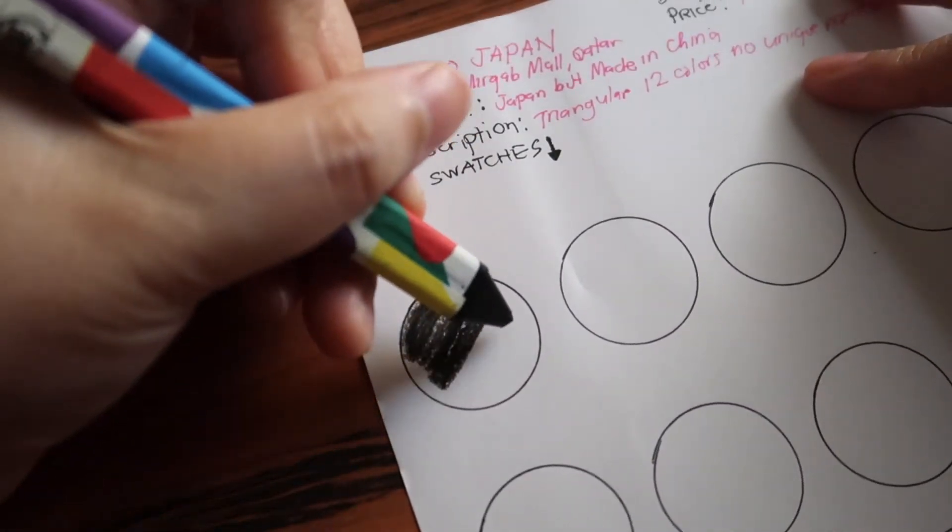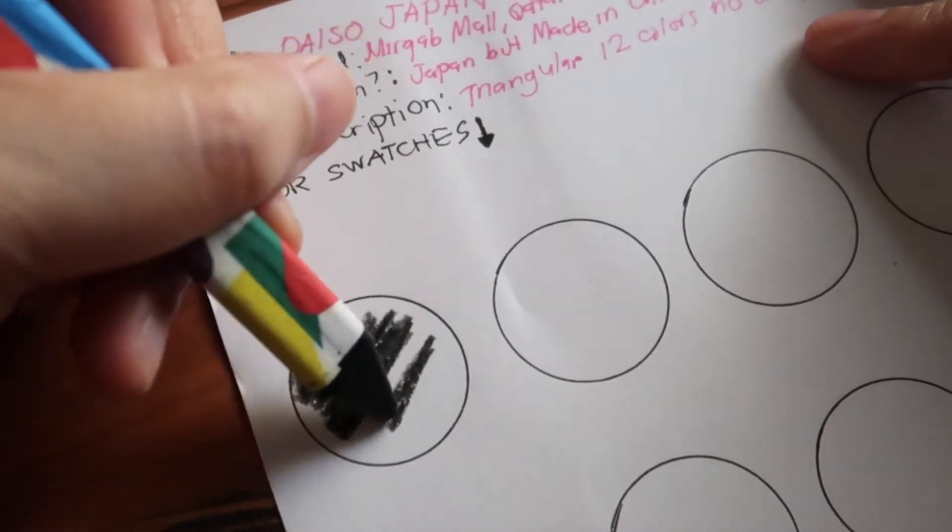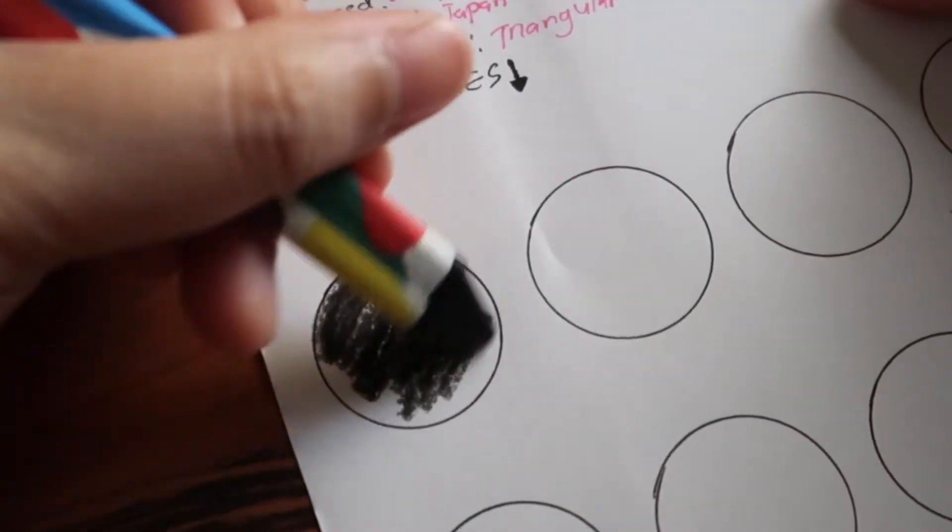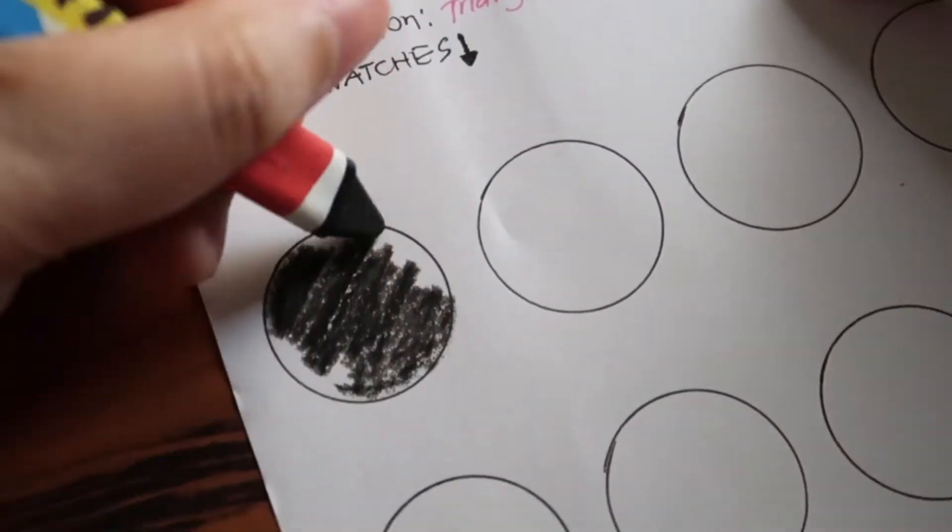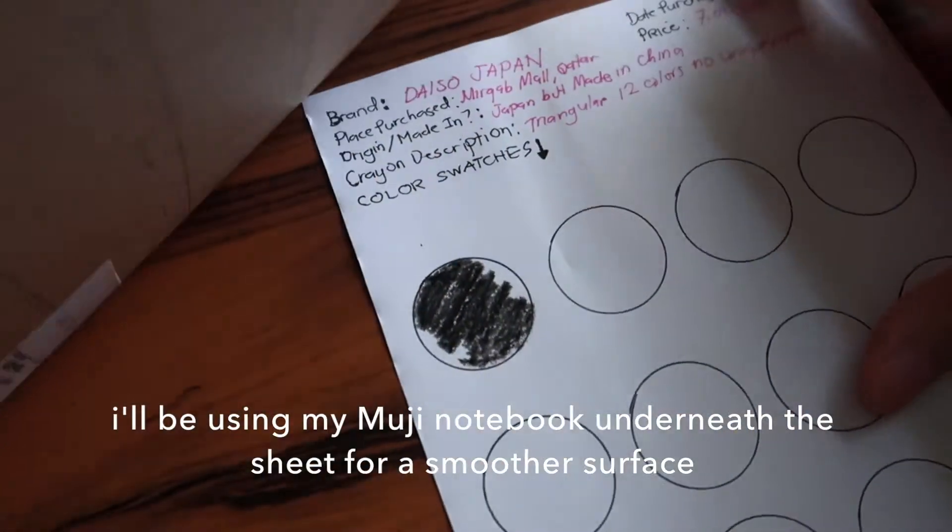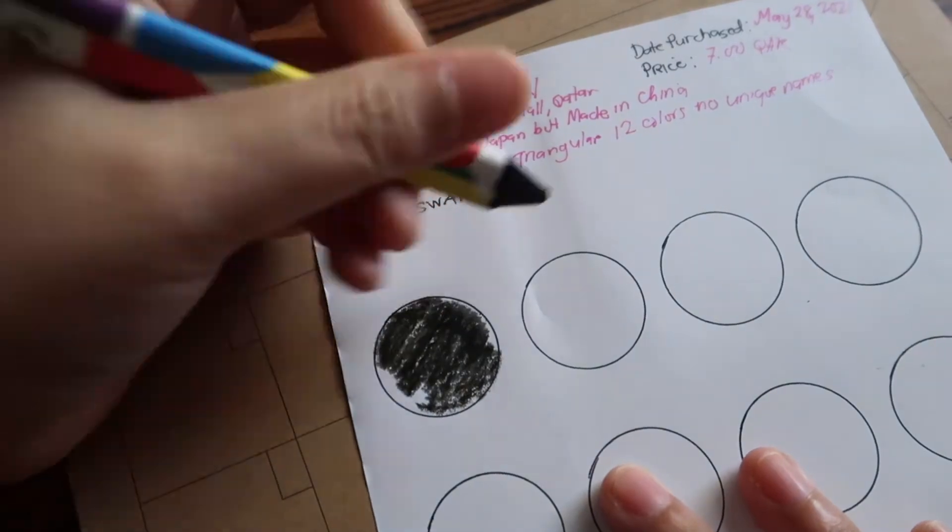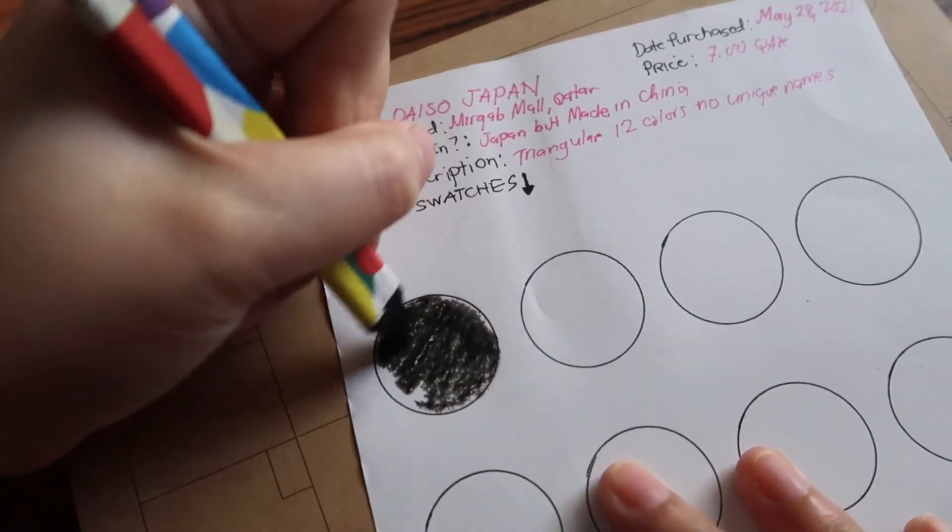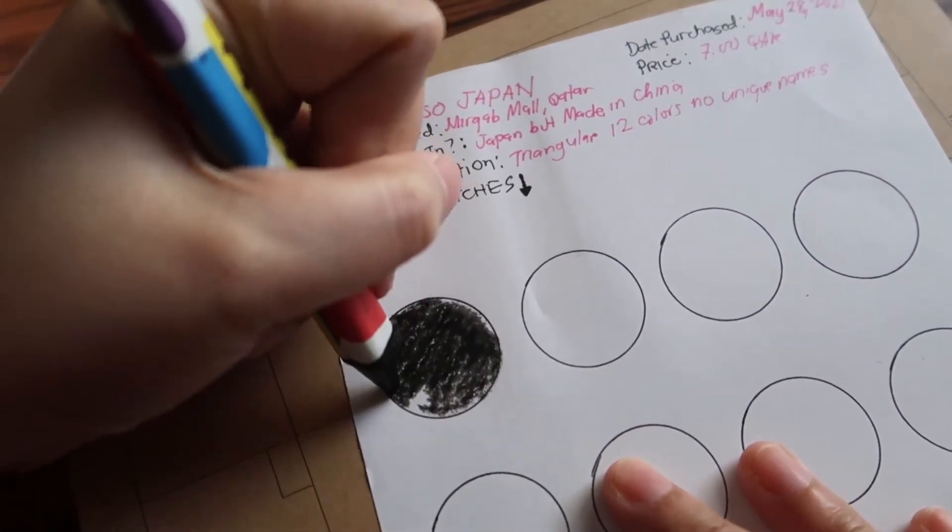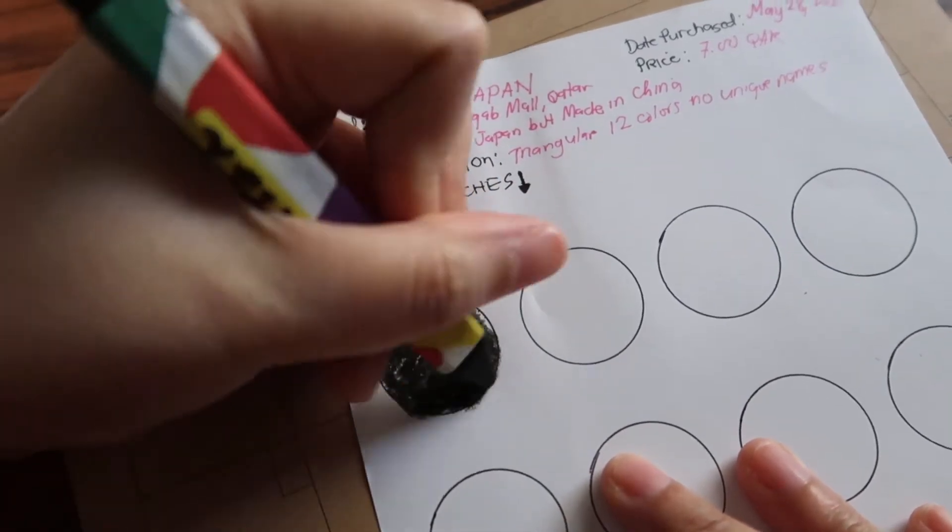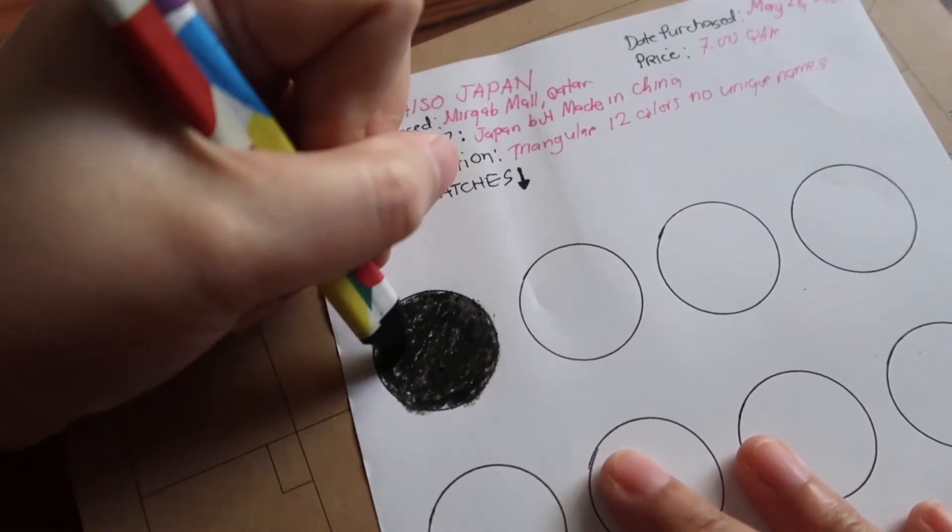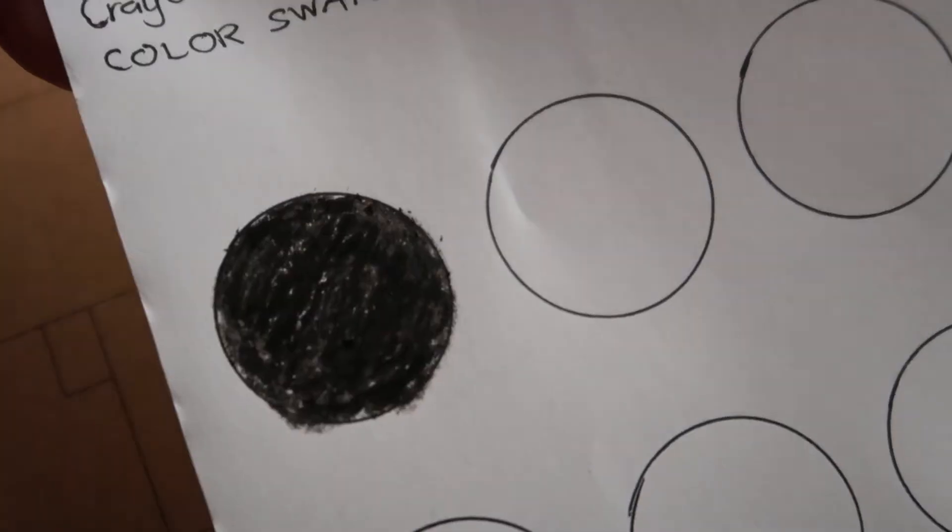It feels smooth. This feels better now with a softer surface for coloring. So this is obviously black. Can you see the flakes?